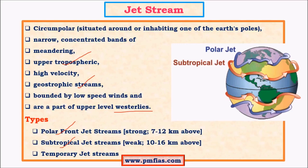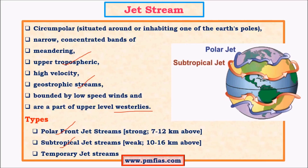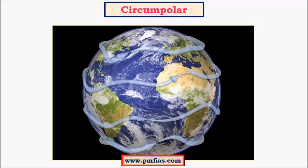The Somali jet stream is one example of a temporary jet stream, about which we will study when studying Indian monsoons. Jet streams are circumpolar winds, meaning they follow a path with the poles as their center. If we look from the top view, the poles are at the center and the path of the jet stream circles around these poles. Both polar and subtropical jet streams are called circumpolar winds.